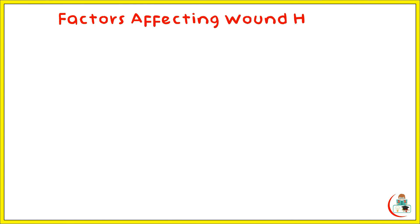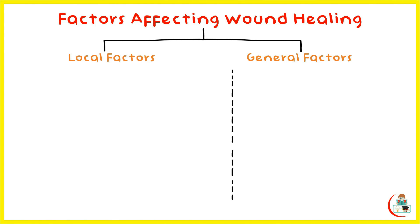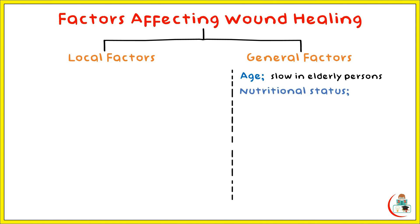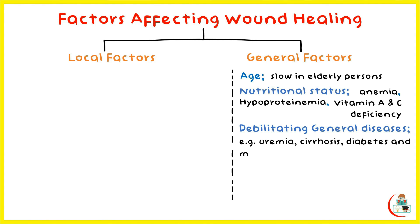Factors affecting wound healing are categorized as general factors and local factors, and all of them delay wound healing. The general factors include age — healing is slow in elderly persons. Good nutritional status is essential; anemia, hypoproteinemia, and vitamin A, C, D deficiencies all delay healing. Debilitating general diseases like uremia, cirrhosis, diabetes mellitus, and malignancy, as well as drug intake such as corticosteroids and chemotherapy, all have a negative effect on wound healing.